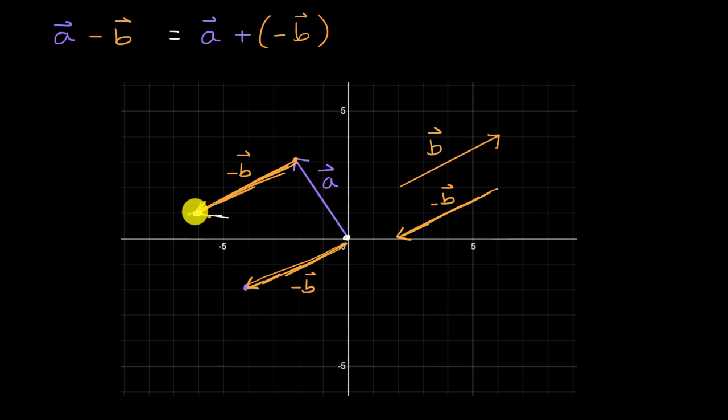So this would be the result right over here, which you could view as the sum of a plus negative b, or the difference of vectors a and b, or vector a minus vector b.